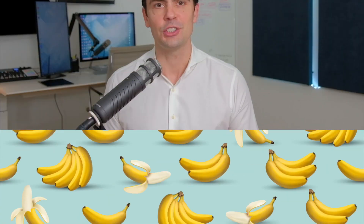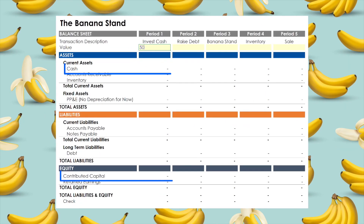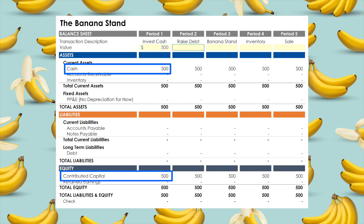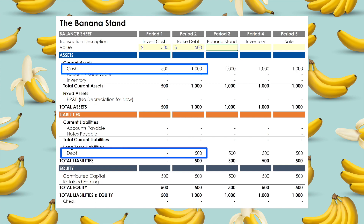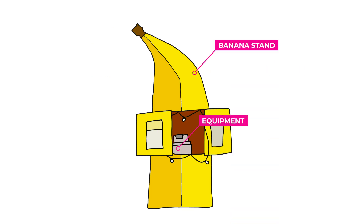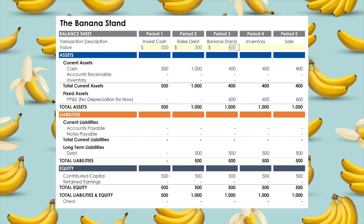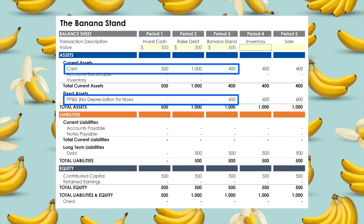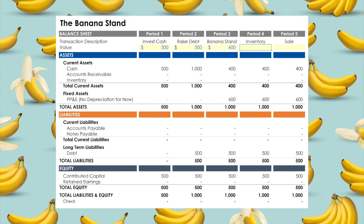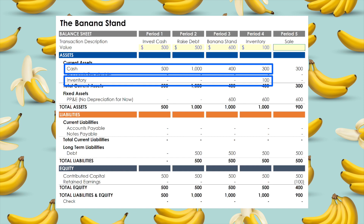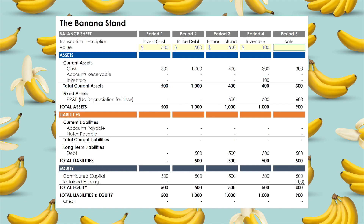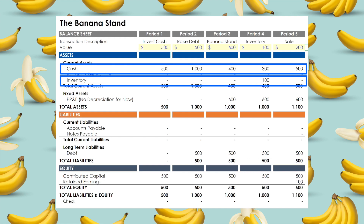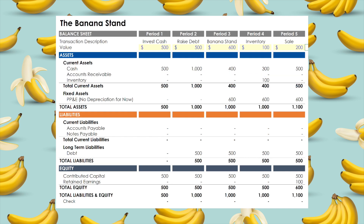First, our new banana stand company needs cash. So in period one, you invest cash in the company — cash and contributed capital both increase by the same amount. But the company needs more cash, so in period two, the company raises debt — cash and debt both increase by the same amount. Next, in period three, the company purchases a banana stand and equipment — cash is reduced by the amount of the purchase and PP&E increases by the same amount. Finally, in period four, the company purchases inventory for 100 chocolate bananas — cash is reduced by the amount of inventory purchased and inventory grows by the same amount. Then in period five, the company sells 100 chocolate bananas at a 50% profit — cash increases by the amount of the sale, and inventory is reduced to zero.